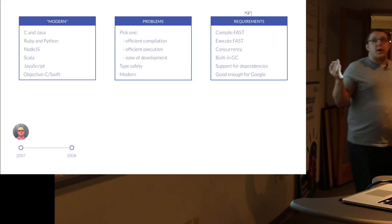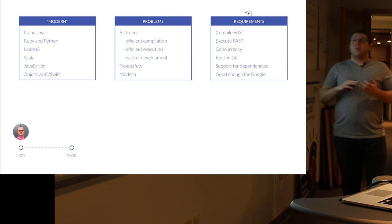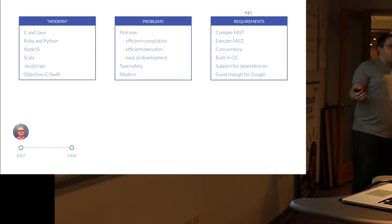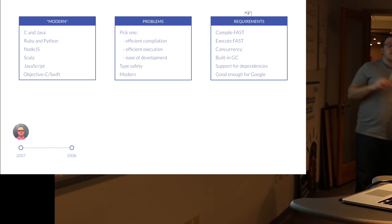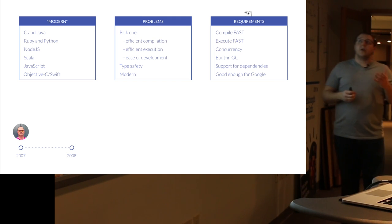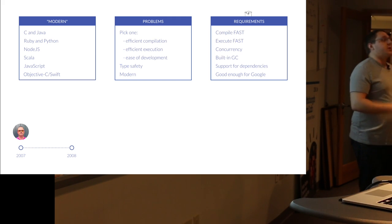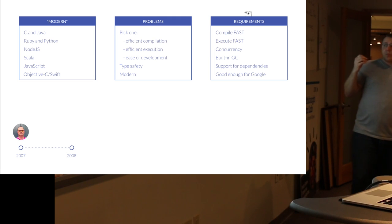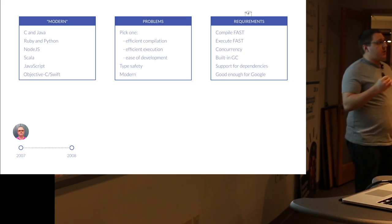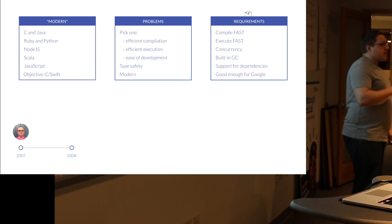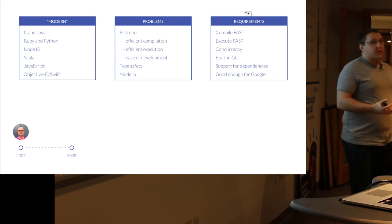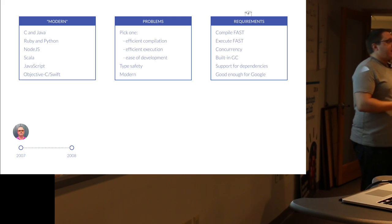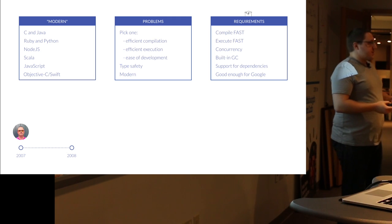So they came up with a list of requirements. First, it has to compile incredibly fast and execute incredibly fast. It has to be highly concurrent — we work in a microservices model, operating on multiple cores. Built-in garbage collection, because nobody has time to write free(). Support for dependencies, because community was one of the things that made Ruby and Python stronger than C and Java — the ability to just grab a community tool and bring it in. And it had to be good enough for Google to run in production safely.